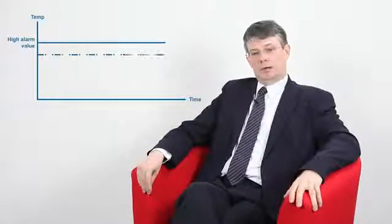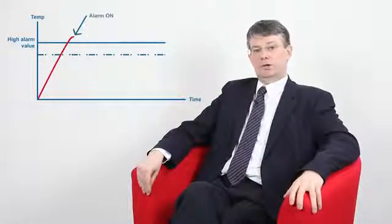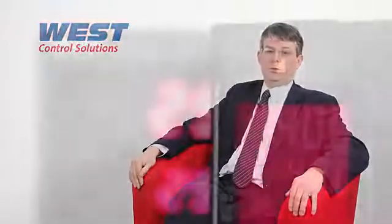Another useful feature found on some of our instruments is the adjustable alarm delay timer. With this, when the alarm value is reached, instead of the alarm activating immediately, a timer is started. Only if the alarm condition has been present for the entire duration of the alarm time set does the alarm actually activate. This can be used to prevent nuisance alarms caused by momentary disturbances in the process. Another example of its use is to prevent product from being drawn off from a process unless it has been at a certain temperature for a certain amount of time — for instance, because the process has a temperature-dependent chemical reaction that can only take place after the correct temperature has been reached.